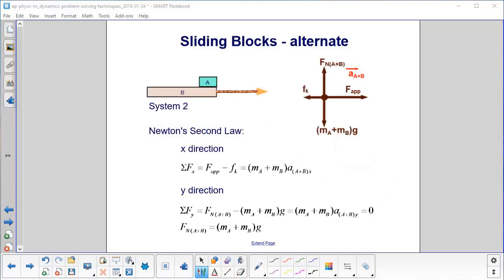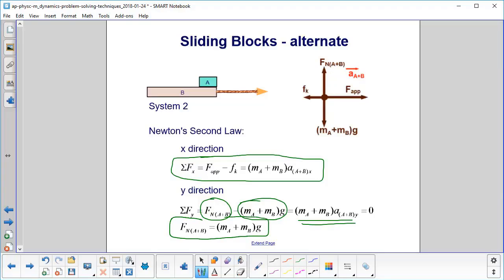Newton's Second Law, we apply it in the x direction and we have the applied force minus the kinetic friction force is equal to the sum of the masses in the system times the combined acceleration of the two blocks. In the y direction, we have the normal force and we have gravity pulling it down and that's going to equal the acceleration in the y direction which is zero. So we come up with here's the normal force for the system of blocks A and B.